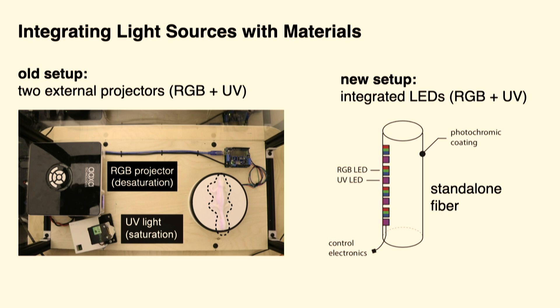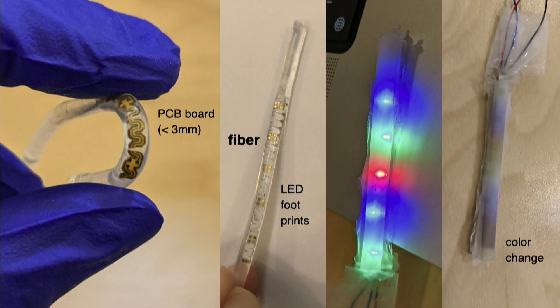Another thing we are currently exploring is to get rid of these external light sources. So far we are applying light via projectors — a normal office projector and a UV light in a box. But we are also trying out textiles. There's a technology where you can embed tiny LEDs into fibers, and if you apply these RGB and UV light sources inside the fiber, we can maybe make this a standalone product. Here you see a first prototype of such a fiber — we embedded a PCB board, added some LEDs, shone the light on it, and you see how our photochromic coating adjusts the color.